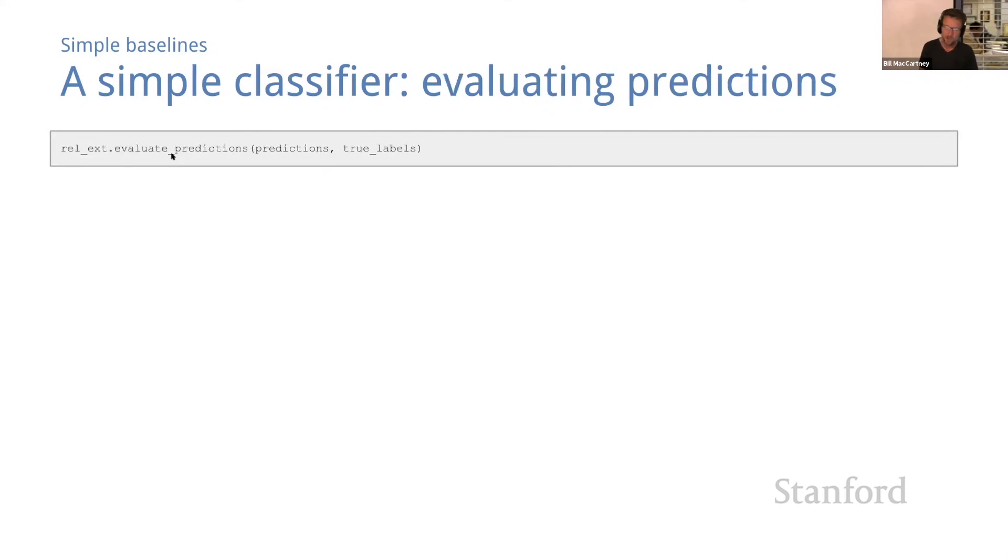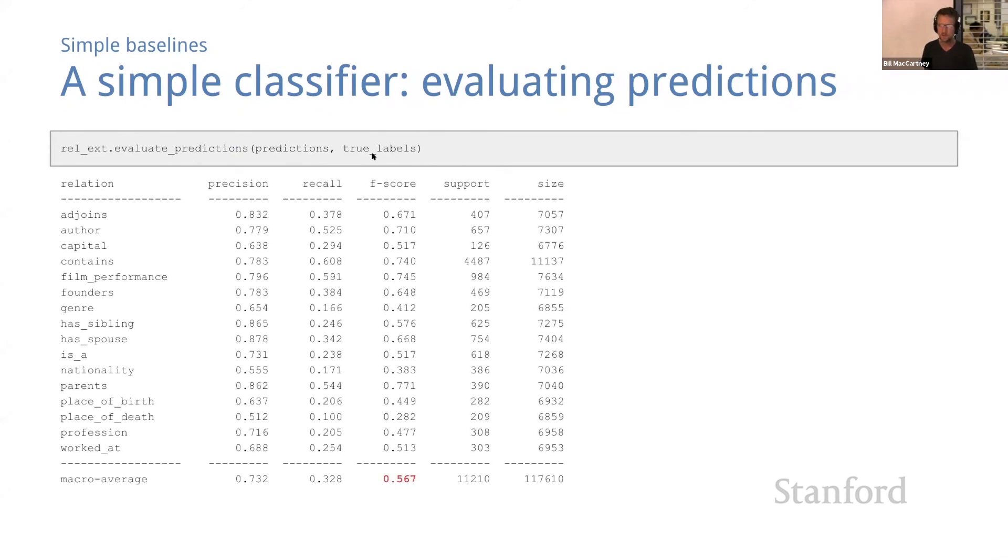And our third building block is evaluate_predictions. This is a function that takes as arguments the two parallel dictionaries of predictions and true labels produced by predict, and it prints evaluation metrics for each relation like we saw earlier.